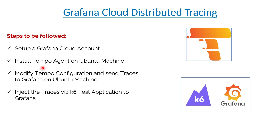As prerequisites, we'll be creating a Grafana Cloud account, then installing the Tempo agent on our local machine, then modifying the configuration to send data to Grafana, and then injecting traces from a test application using k6 - an open source load testing tool adopted by Grafana. That's pretty much what we'll be doing in today's session.